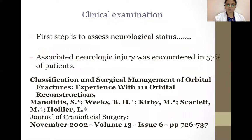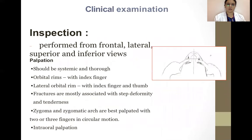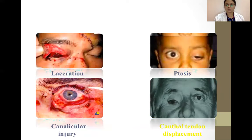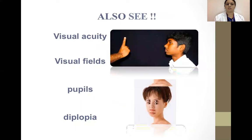Coming to the diagnosis: the first step is to assess neurological status. Associated neurologic injury was encountered in about 57% of patients as per a study by Manolidis, Weeks, and Kirby et al. Clinical examination: inspection is performed from frontal, lateral, superior and inferior views. Palpation should be systematic and thorough — orbital rims with the index finger, lateral orbital rim with index finger and thumb. Fractures are mostly associated with step deformity and tenderness. The zygoma and arch are best palpated with two or three fingers in a circular motion, followed by intra-oral palpation. You also need to check visual acuity, visual fields, pupils, and diplopia.